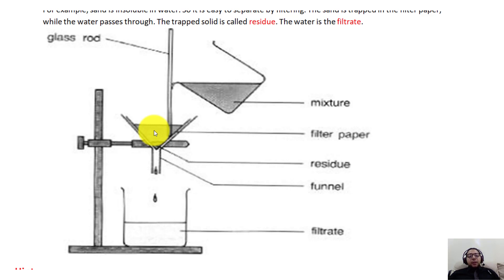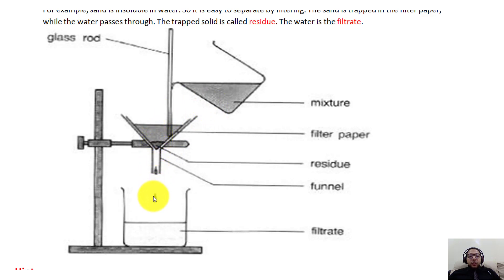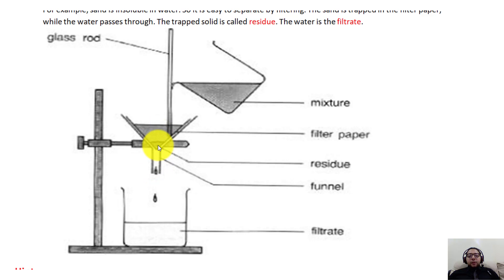The tiny holes in the filter paper cannot let undissolved solids through — if the solid is large enough it will not pass through. The liquid, however, will pass through these holes easily because it is smaller than the holes. Filter paper also cannot block dissolved solids. So if you have salty water mixed with sand, the salty water — salt plus water — will go through, while the sand gets stuck on the filter paper.